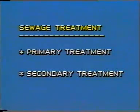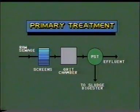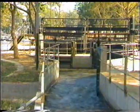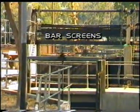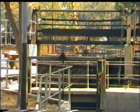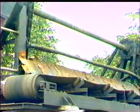Sewage treatment is carried out in two stages: primary treatment and secondary treatment. In primary treatment, sewage passes through bar screens, grit chamber, and primary settling tank. Sewage first passes through the bar screens, where floating and suspended matter such as wood, paper, and rags are removed. The waste material retained on bar screens may be lifted and removed mechanically with the help of a conveyor belt arrangement.